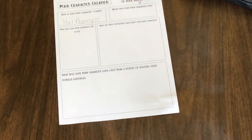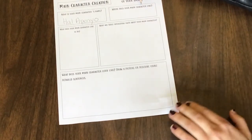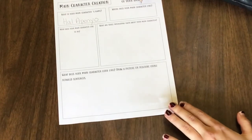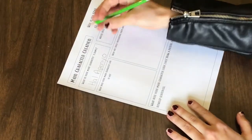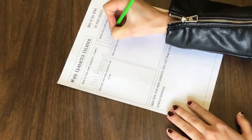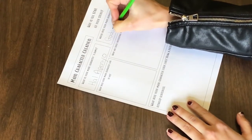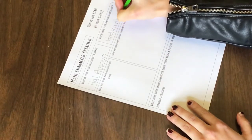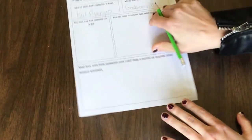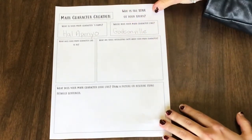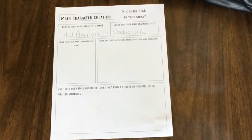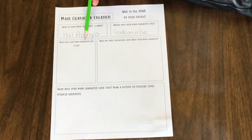Next we're going to look at where does my character live. And I'm going to have my character live in a fictional place. So I'm going to make up a place and I'm going to call this place Godsonville. Your setting could be a real place if you wanted to, but it can also be made up.